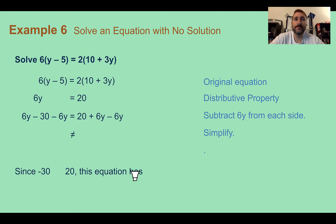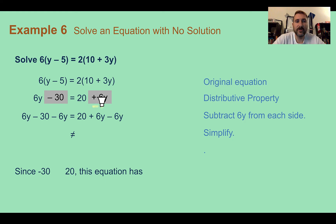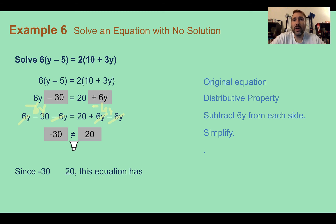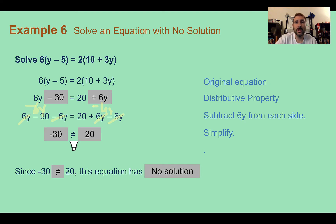Example 6: solve an equation with no solution. Going through and solving as we have been — first distributing — then subtracting 6y from both sides. Either way, I end up with 6y minus 6y which is 0 on both sides, and I'm left with negative 30 on the left and 20 on the right. No matter what I do from this point on, those things are not equal. It's not anything we did wrong — it just means there are no solutions. Since negative 30 is not equal to 20, the equation has no solution. If your variables all eliminate and you have a false statement, that indicates no solution.